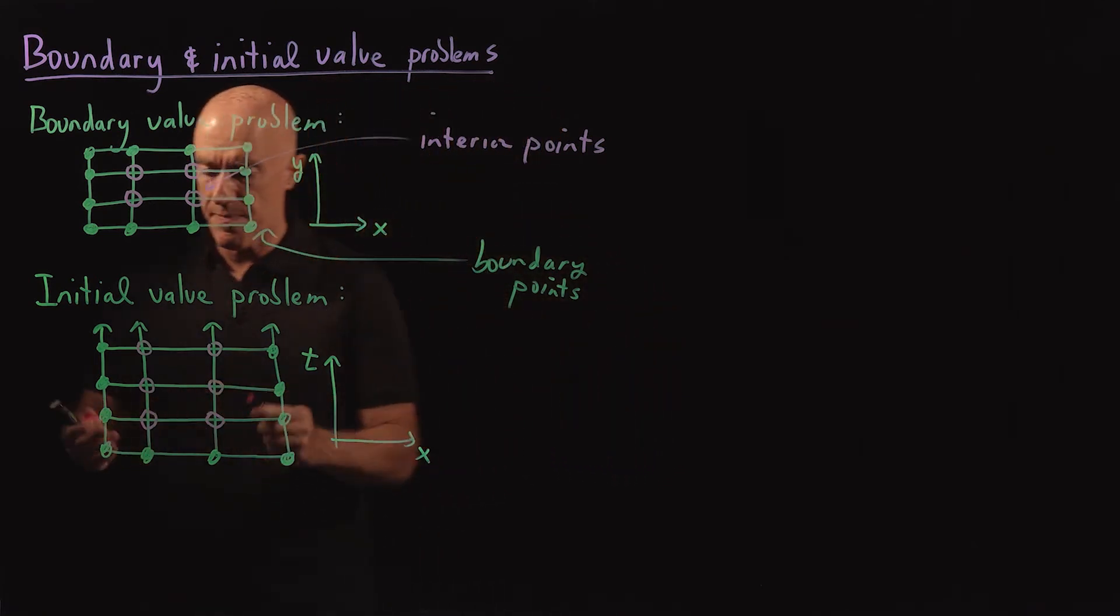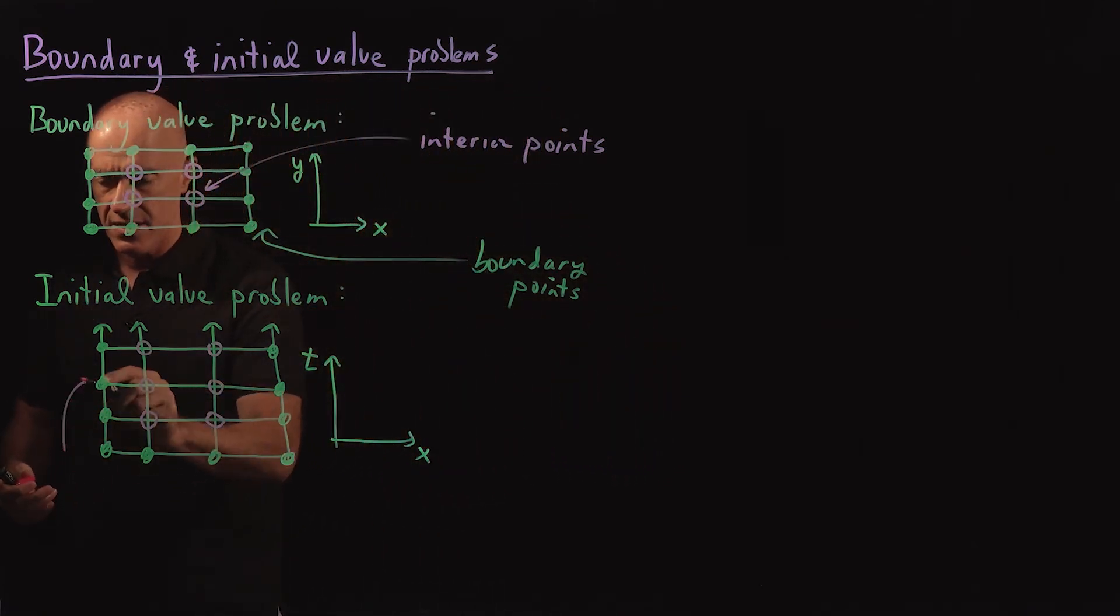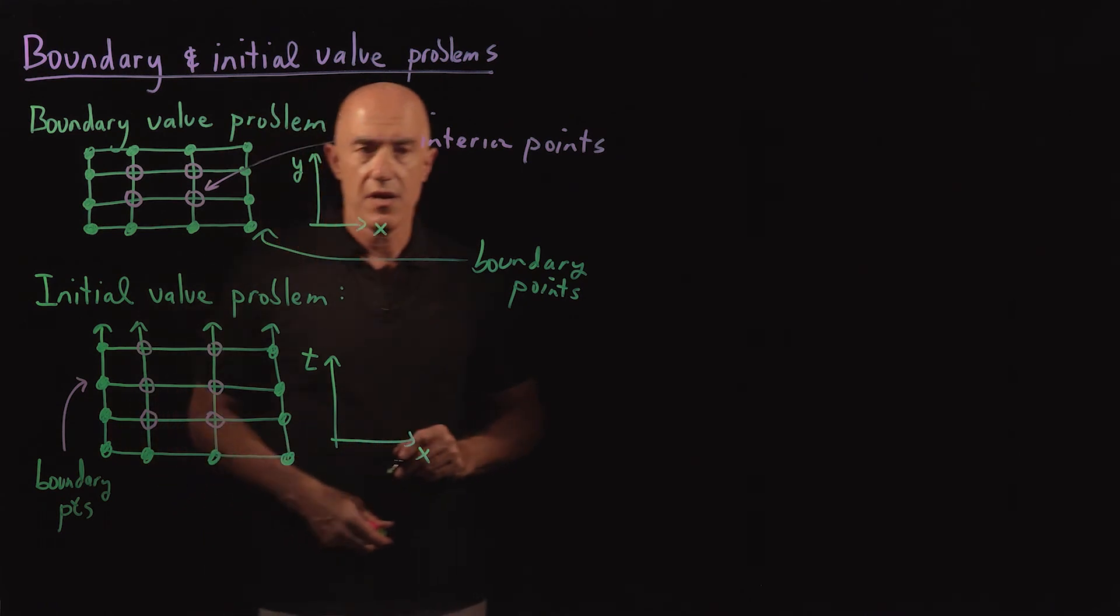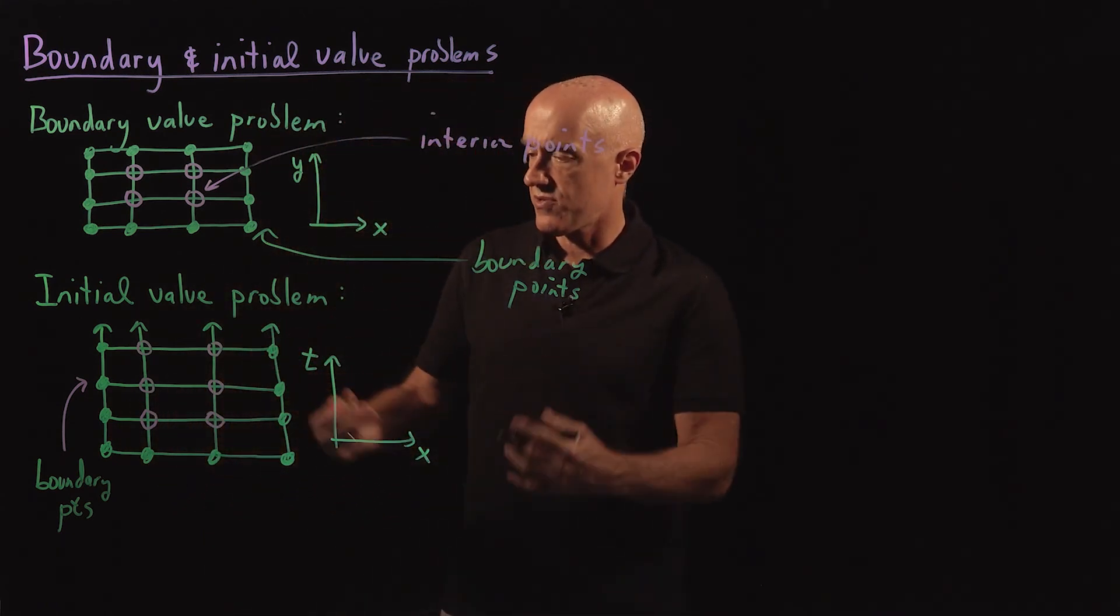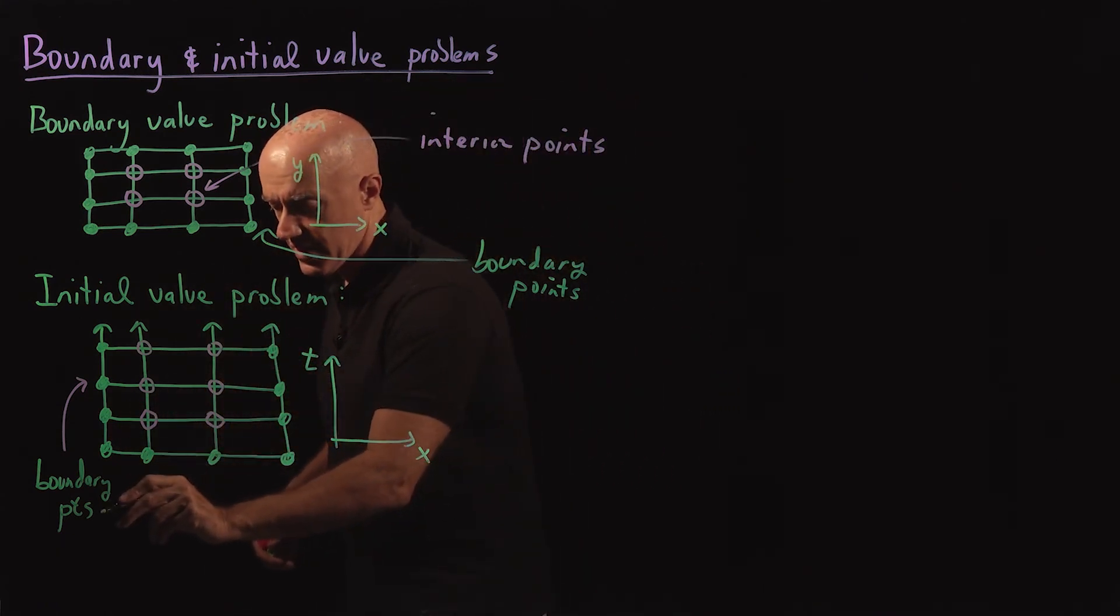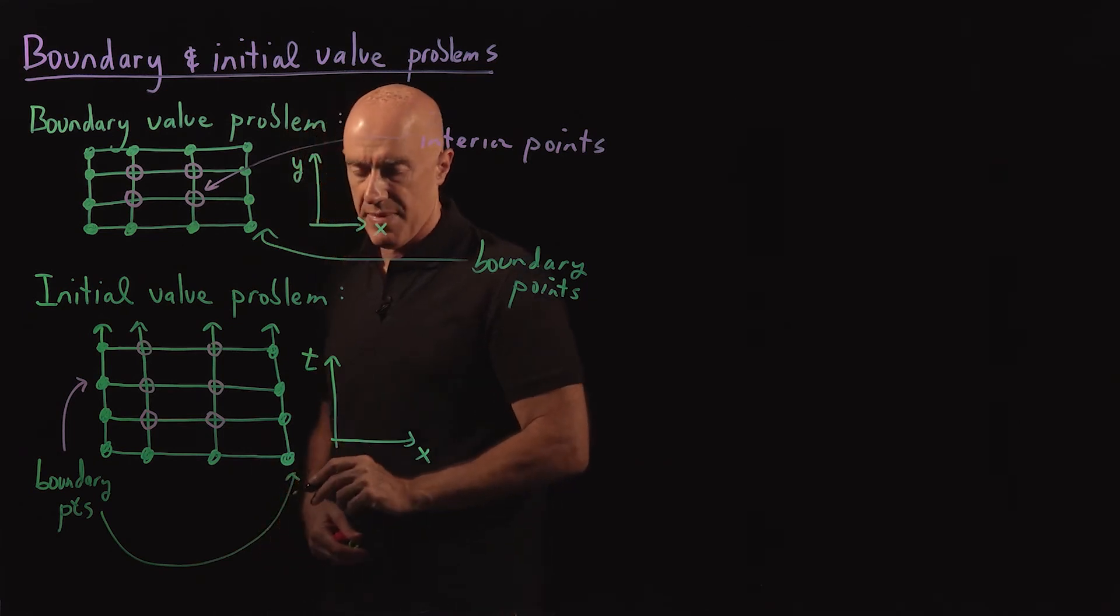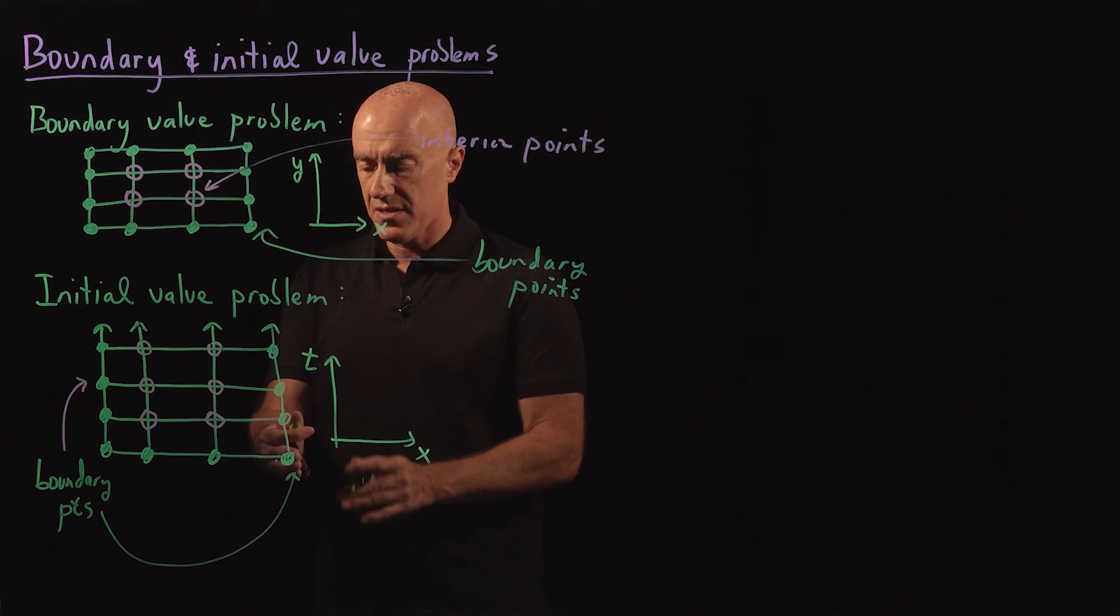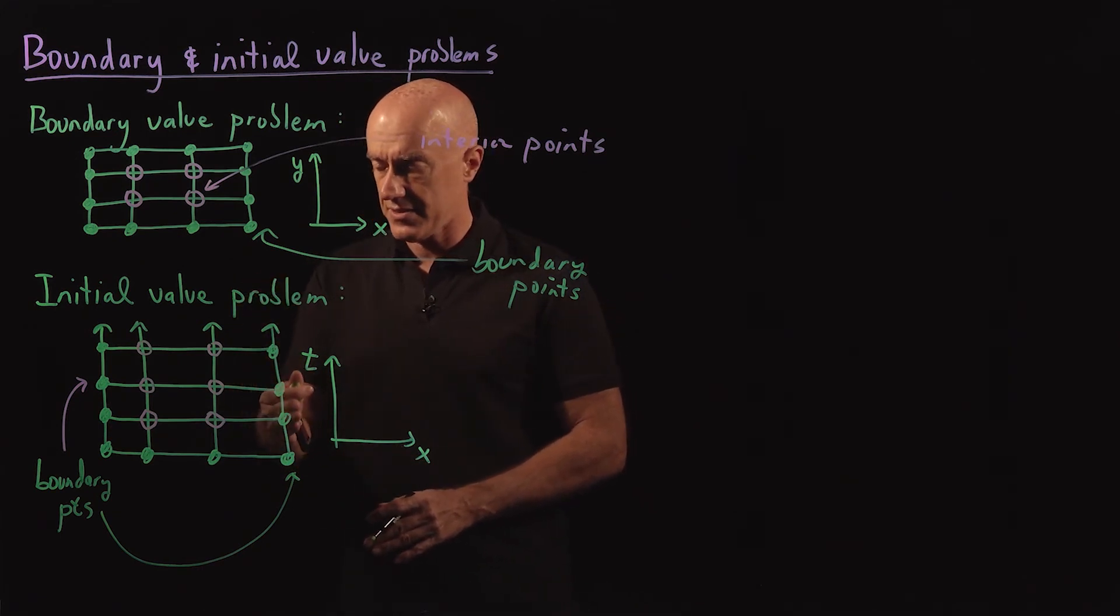Here you have boundary conditions again. So these are the boundary points. Those are supposed to be given to you in the problem specification. But interior to the boundary, this is the boundary and this is the boundary, right? So the smallest value of x, the largest value of x.